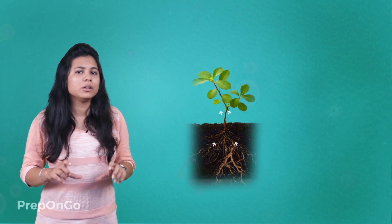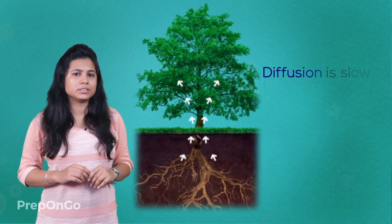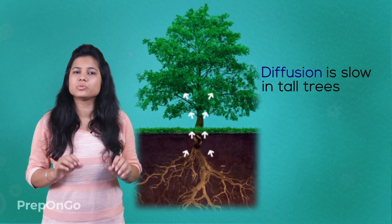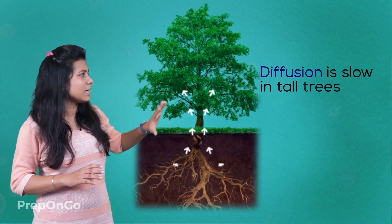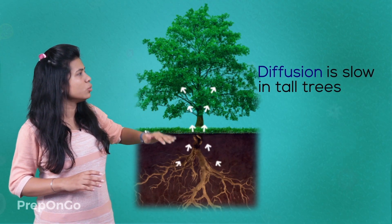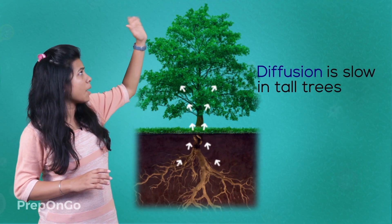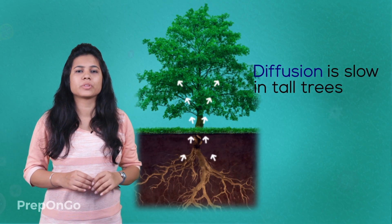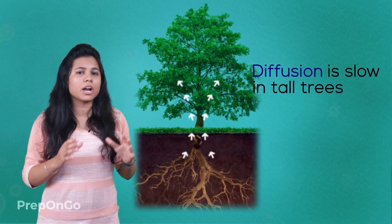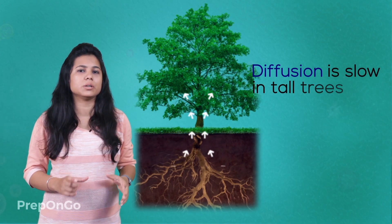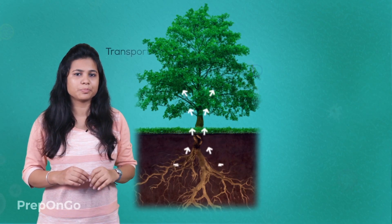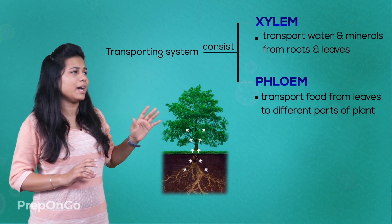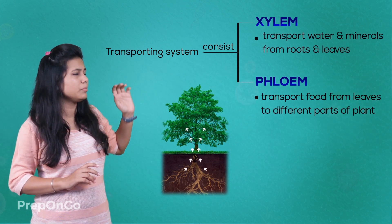But what happens with taller trees? The diffusion process will be slow because as the distance between the root and the upper tip increases, diffusion slows down. So there is another transporting system which plants have developed, and they have two specialized parts called xylem and phloem.